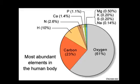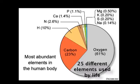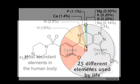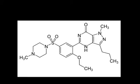All living things contain similar chemical elements. In all, there are about 25 different elements necessary for life. With the exception of ionic forms of calcium, sodium, and potassium, none of them exist in living things in their elemental or atomic form. Carbon, hydrogen, oxygen, nitrogen, and sulfur are combined into organic compounds.